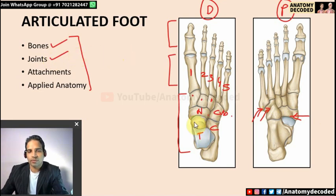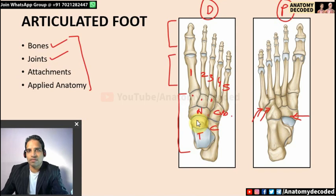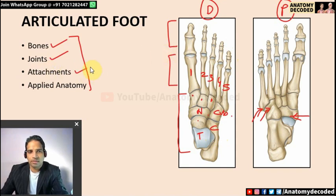Joints of the articulated foot: the ankle joint — talus articulates with tibia and fibula. Below the talus is the subtalar joint. The talo-calcaneo-navicular joint (between talus, navicular, and calcaneus) is a ball and socket synovial joint — the ball is the head of talus, and the socket is formed by the navicular bone and the spring ligament connecting navicular and calcaneus. Intertarsal joints are plane synovial joints. Interphalangeal joints are hinge synovial joints.